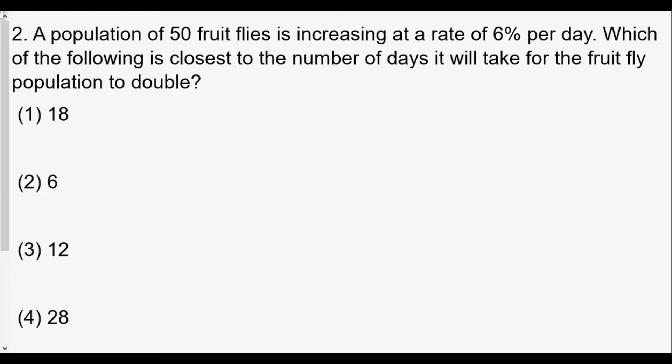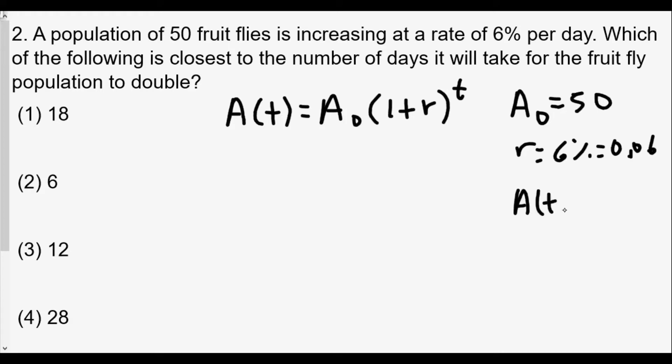Number two: The population of 50 fruit flies is increasing at a rate of 6% per day. Which of the following is closest to the number of days it will take for the fruit fly population to double? Again, A(t) equals A₀ times (1 + r) raised to t power. We're starting with 50 fruit flies, so A₀ is 50. Our rate is 6%, which equals 0.06. We want to figure out the time when the population doubles, so A(t) will be 100.